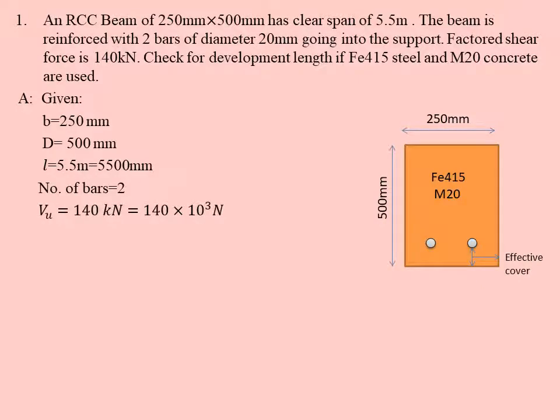VU, when you convert, 1 kN equals 1000 N, so 140 kN is 140 × 10³ N. FCK, that is M20, is the characteristic strength, 20 N/mm².